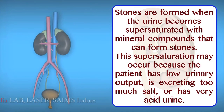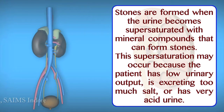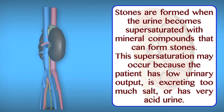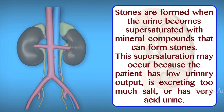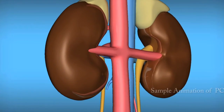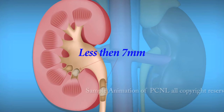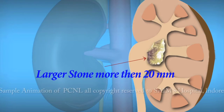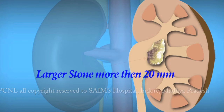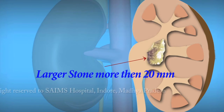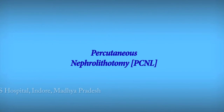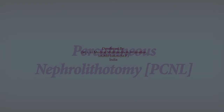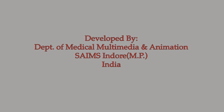This supersaturation may occur because the patient has low urinary output, or is excreting too much salt, or has very acidic urine. Small kidney stones, less than 7 mm, usually pass on their own. Larger stones require a surgical procedure to remove them. Kidney stones larger than 20 mm are usually treated by PCNL, or percutaneous nephrolithotomy.